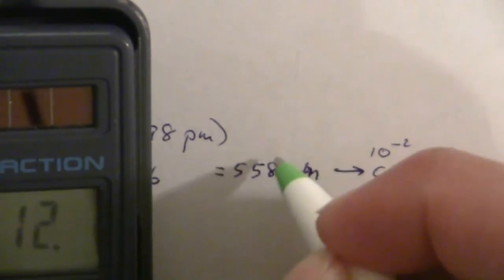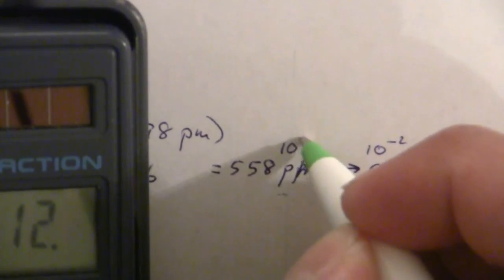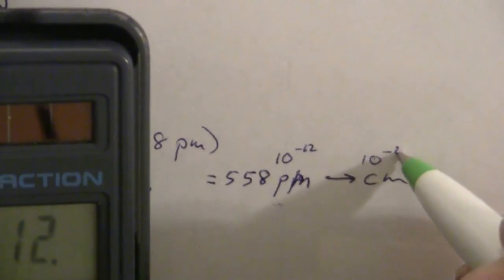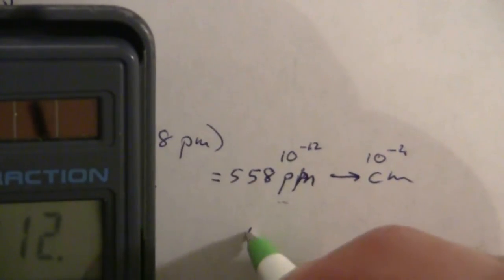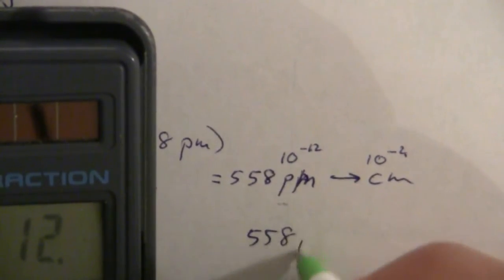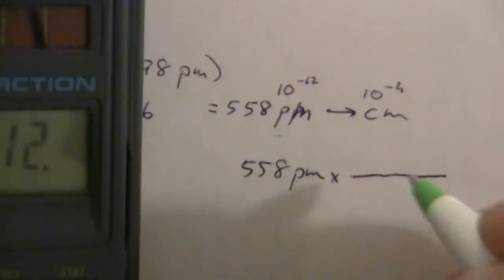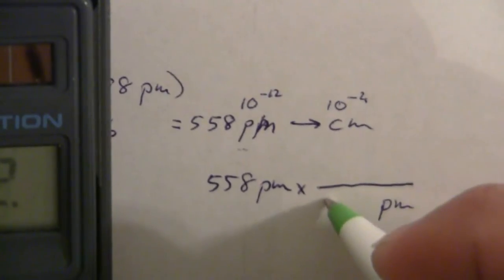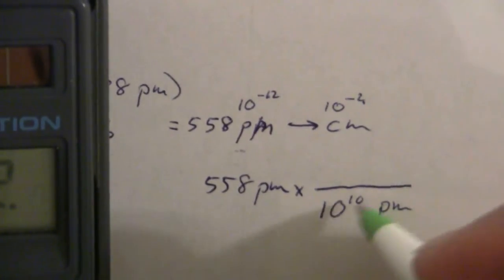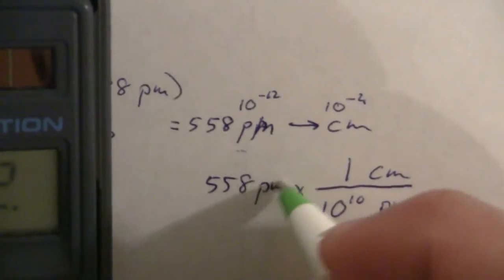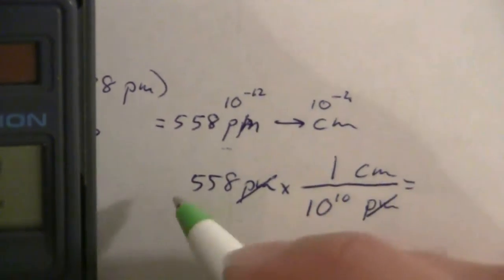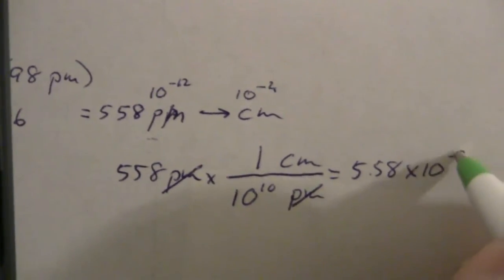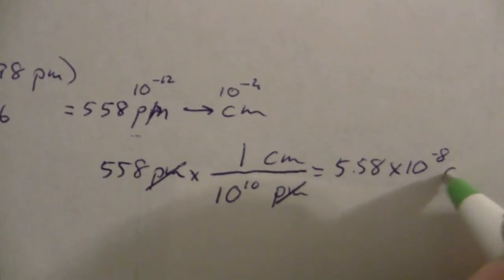centimeters, 10 to the minus 2, picometers, 10 to the minus 12. So the difference there is 10 to the minus 10th. Or we can say that 558 picometers times, there are 10 to the 10th picometers for every centimeter. So our picometers will cancel, and we'll get 5.58 times 10 to the minus 8th centimeters.